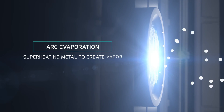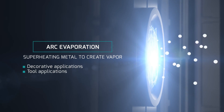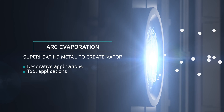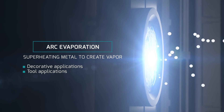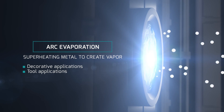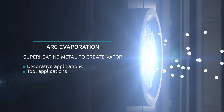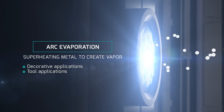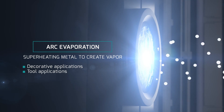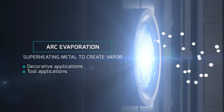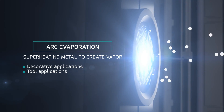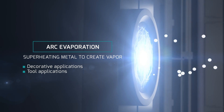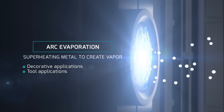With ARC evaporation, a high current discharge on the cathode target will form an ARC spot. Due to the extremely high temperature in that spot and the high current, the target material will be vaporized and ionized.